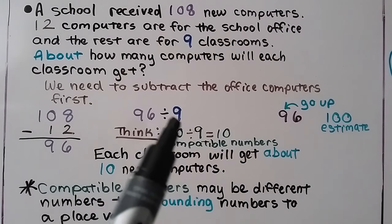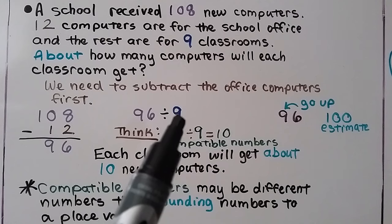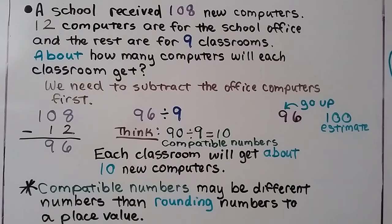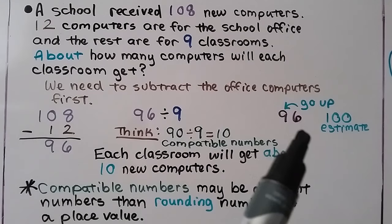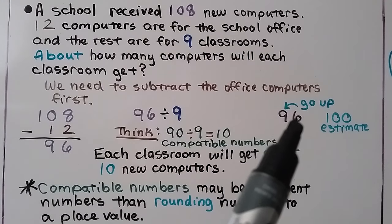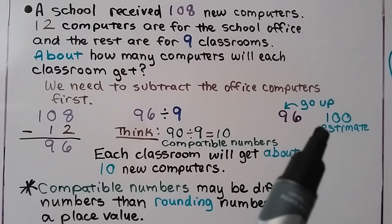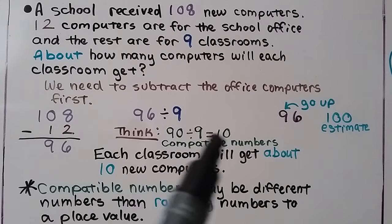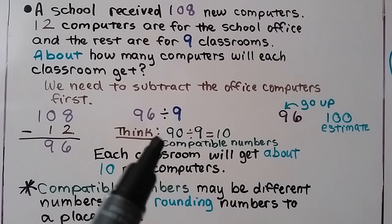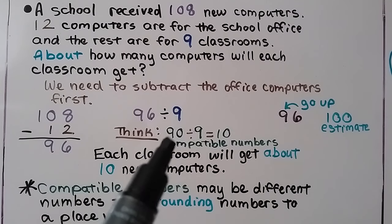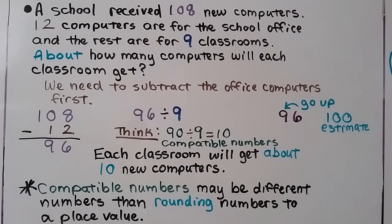We have 96 divided by 9. You might think to round, but remember we're using compatible numbers. Rounding 96 would give us 100, but 100 is not a compatible number with 9. The most compatible number is 90, and 90 divided by 9 equals 10. So each classroom will get about 10 new computers. Compatible numbers may be different numbers than rounding to a place value.